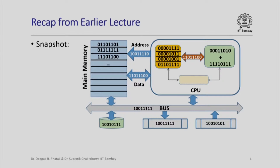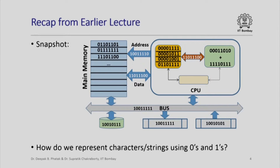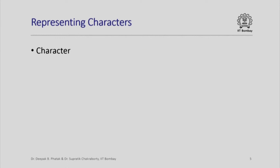From an earlier lecture you would recall this diagram showing the basic structure of a simple computer where all components have information stored as sequences of 0s and 1s. The question we want to ask now is how do we represent characters or strings using 0s and 1s. When we try to represent a character in a computer, a character is going to be represented by a byte, that is 8 bits.